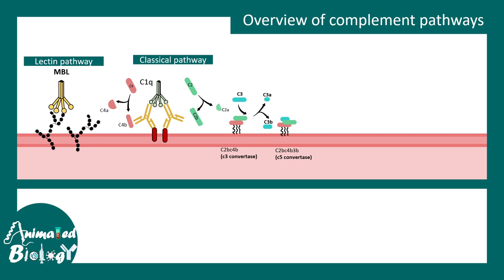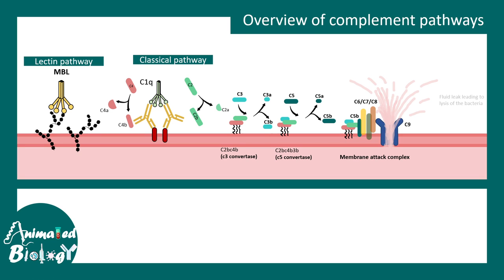C3B gets associated with the membrane complex and forms C5 convertase. C5 convertase is a crucial player in the complement pathway. C5 convertase converts C5 into C5A and C5B. C5A and C3A can work like potent anaphylatoxins. C5B can embed itself into the membrane and attract further complement proteins like C6 to C8. Eventually, it forms the membrane attack complex, which is basically several rings of C9 protein, and this leads to fluid leakage from the membrane and lysis of the bacteria.